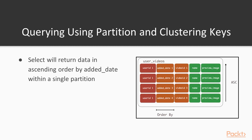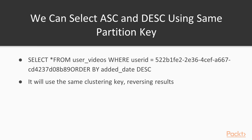Let's query some data using our partition and clustering key. A select will return data in ascending order by added_date within a single partition. We are selecting user_id = 1 as the specific partition, and data is ordered by added_date because it is the clustering key. We can also select in descending order using the same partition key — select star from user_videos where user_id equals the partition key, then sort by added_date descending. That query uses the same clustering key but reverses the results.